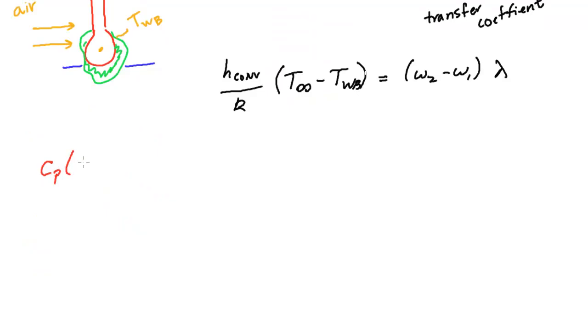So Cp(T1 - T2) has to equal h convective over K times that temperature difference. Now you can say these two things are analogous, where this T infinity was our entering temperature, or our non-saturated temperature. And this T2 was saturated, this is at the end of our tunnel.